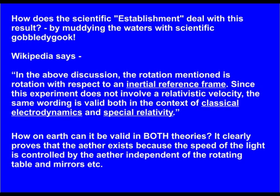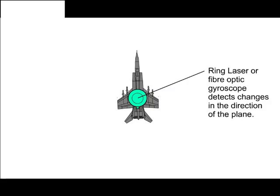How on earth can it be valid in both theories? It clearly proves that the ether exists because the speed of the light is controlled by the ether, independent of the rotating table and mirrors.